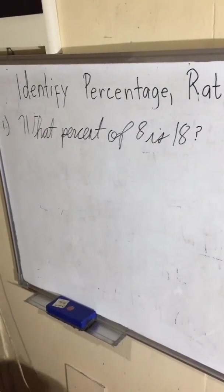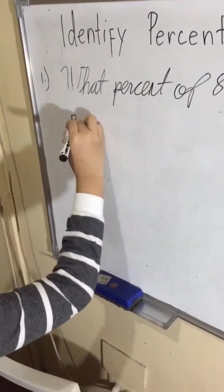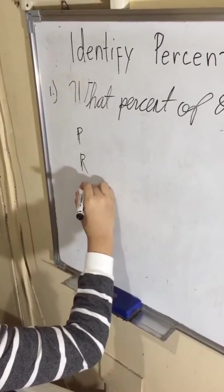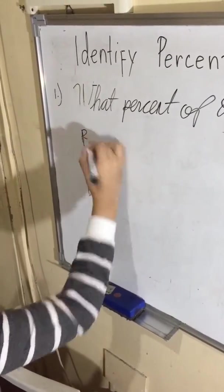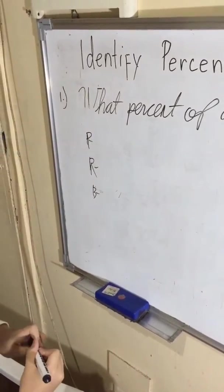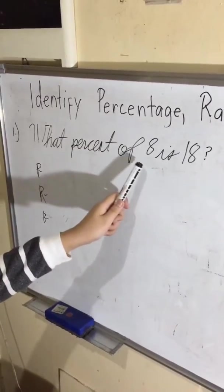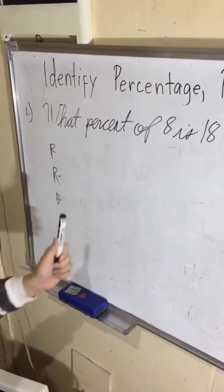What percent of 8 is 18. So we need to find what is missing. As I said earlier, the rate is the number with the percent, and here there are no numbers with the percent next to it, so the rate is the number that we need to find.